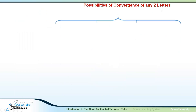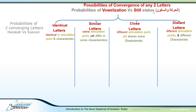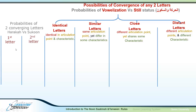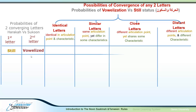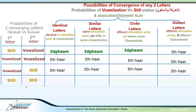Let's revise what we have learned in the previous lesson, where we mentioned four possibilities for the convergence of any two letters, which can be either identical, similar, close, or distant letters. We then talked about the probabilities of vowelization versus still status of those two letters — based on the first and second letter's Haraka and Sukun. The first probability was the first letter being still and the second being vowelized, with the associated Tajweed rules being Idgham and Idhar.